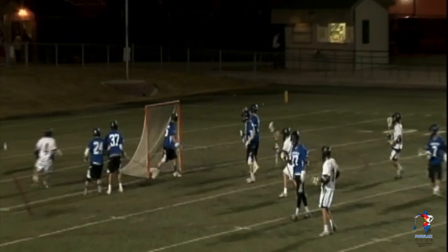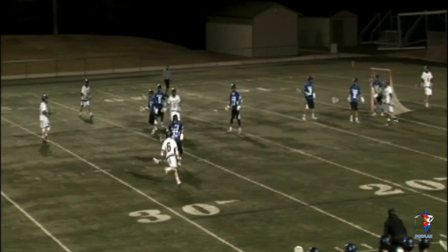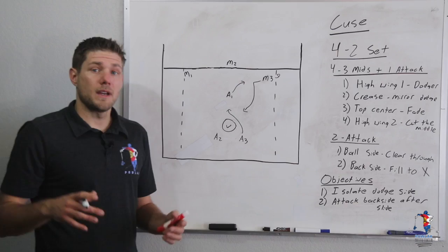Next example, same basic thing. Now he's dodging down the righty alley, coming through, gets a nice shot off, misses cage.